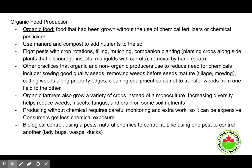Marigolds with carrots is one example. Other practices include removing pests by hand or using soap. Both organic and non-organic producers can reduce the need for chemicals by sowing good quality seeds, removing weeds before seeds mature, tilling and mowing, cutting weeds along property edges, and cleaning equipment so as not to transfer weeds from one field to another.